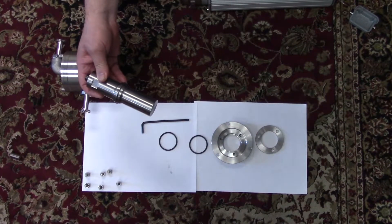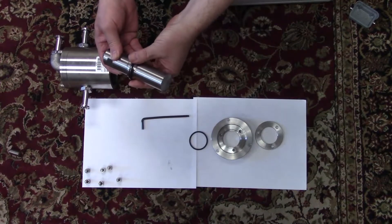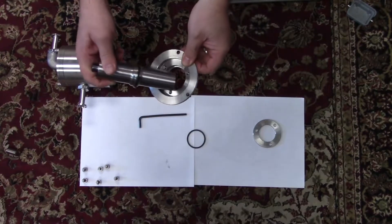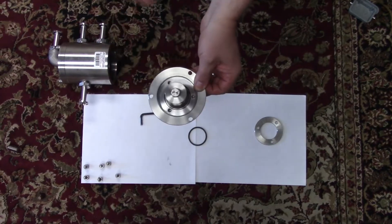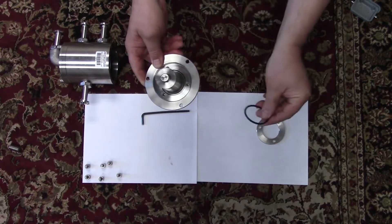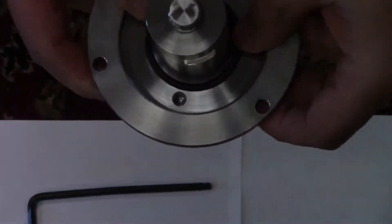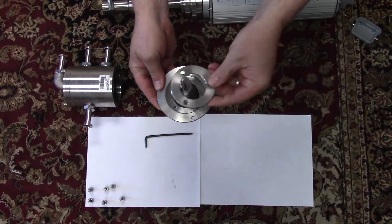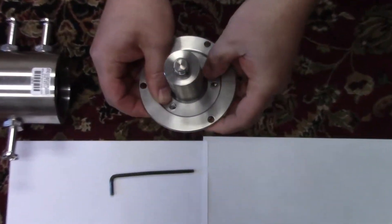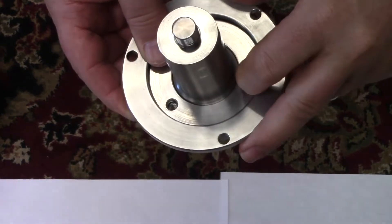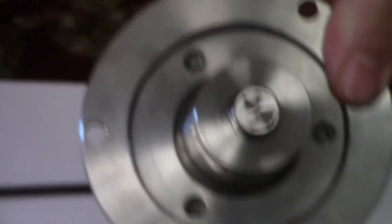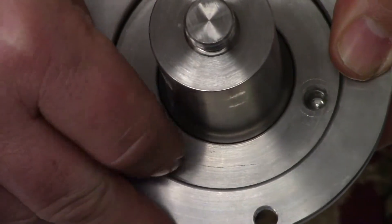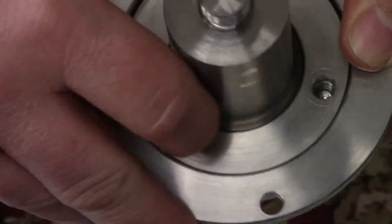I'm going to take the first washer and put it on the bottom. I'm taking the second washer. The next plate, positioning it right over. I'm going to finger tighten these and then tighten them later when the unit is secure.